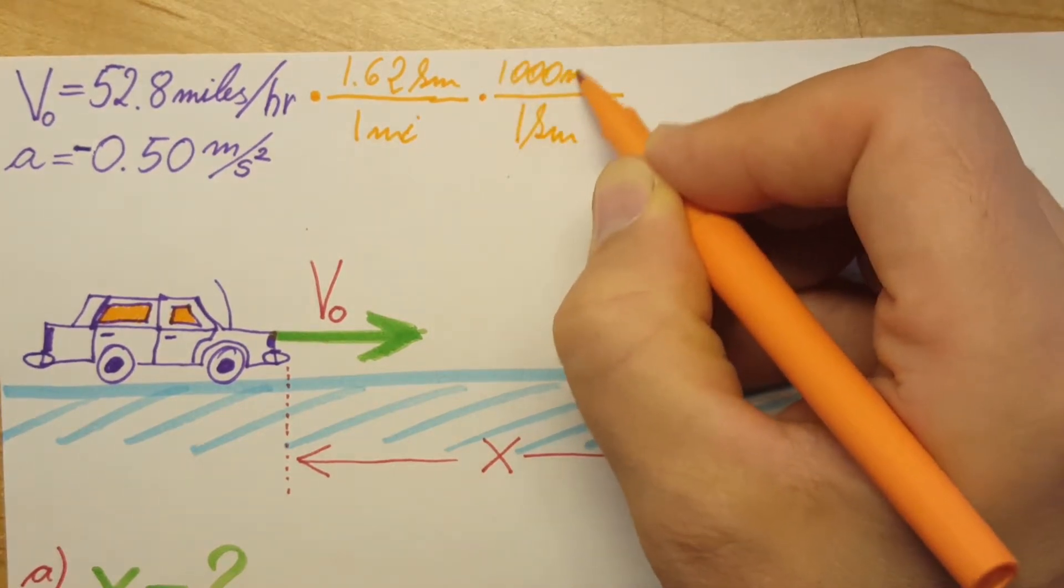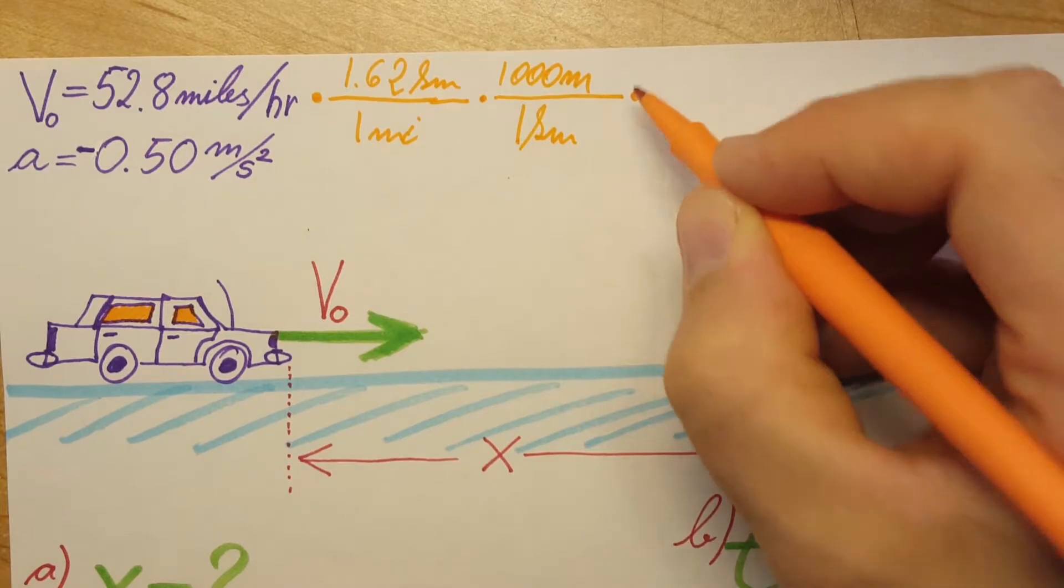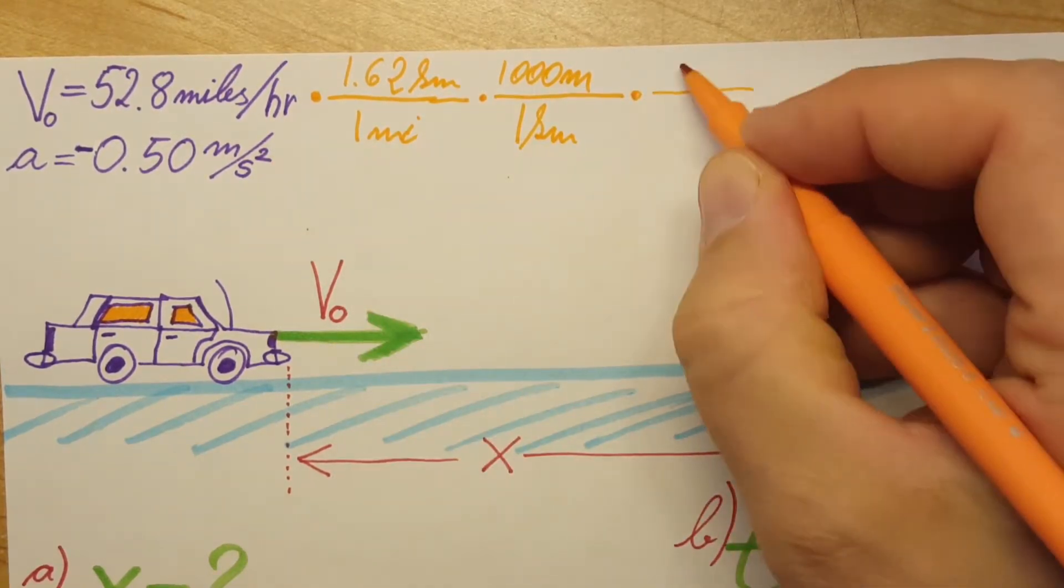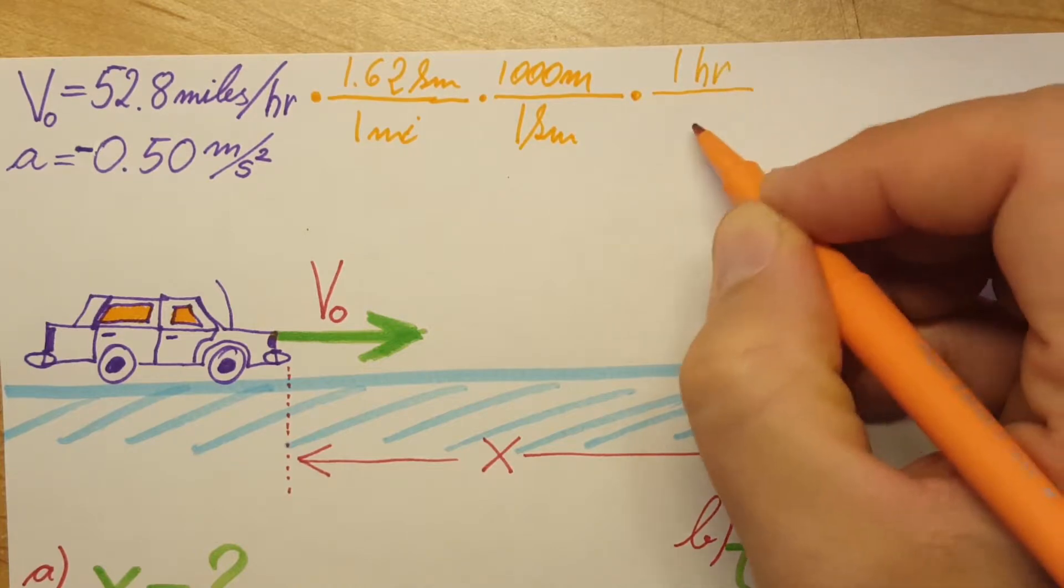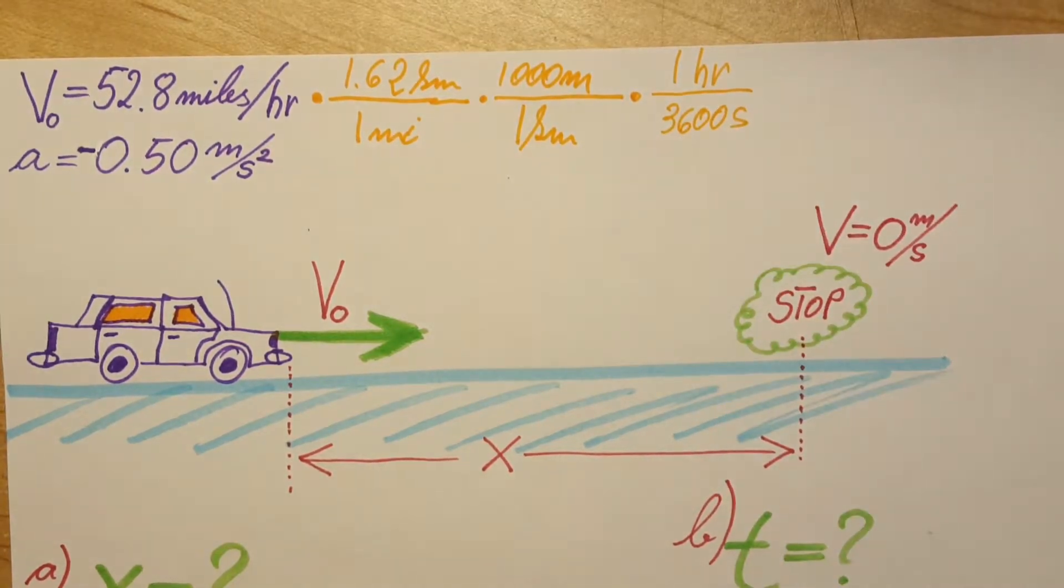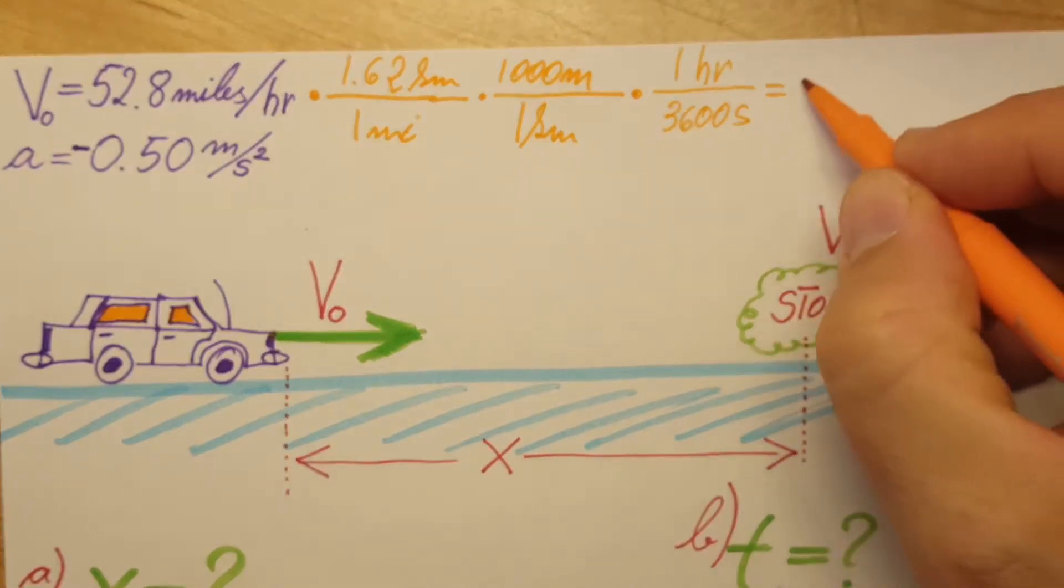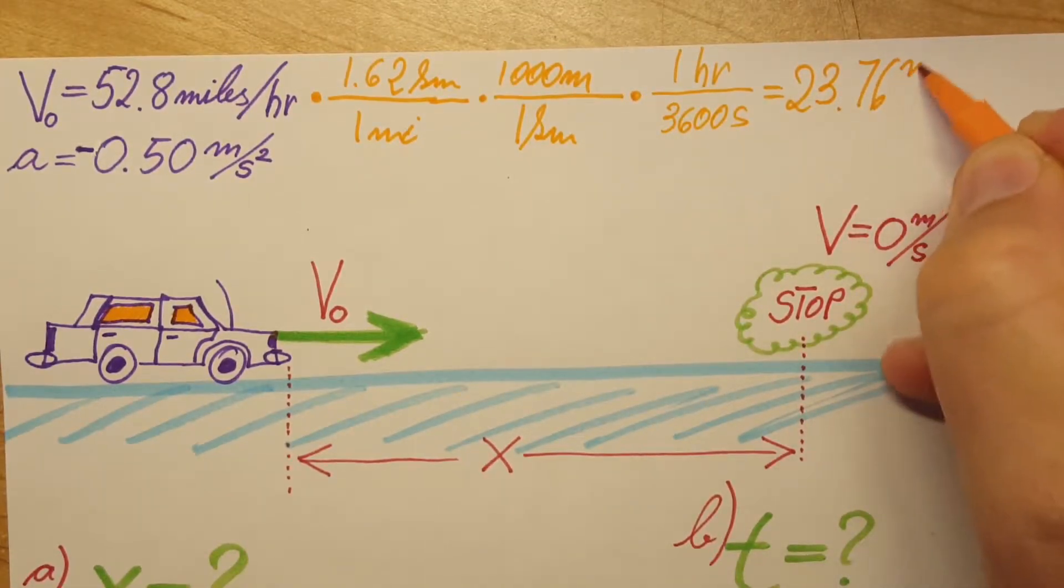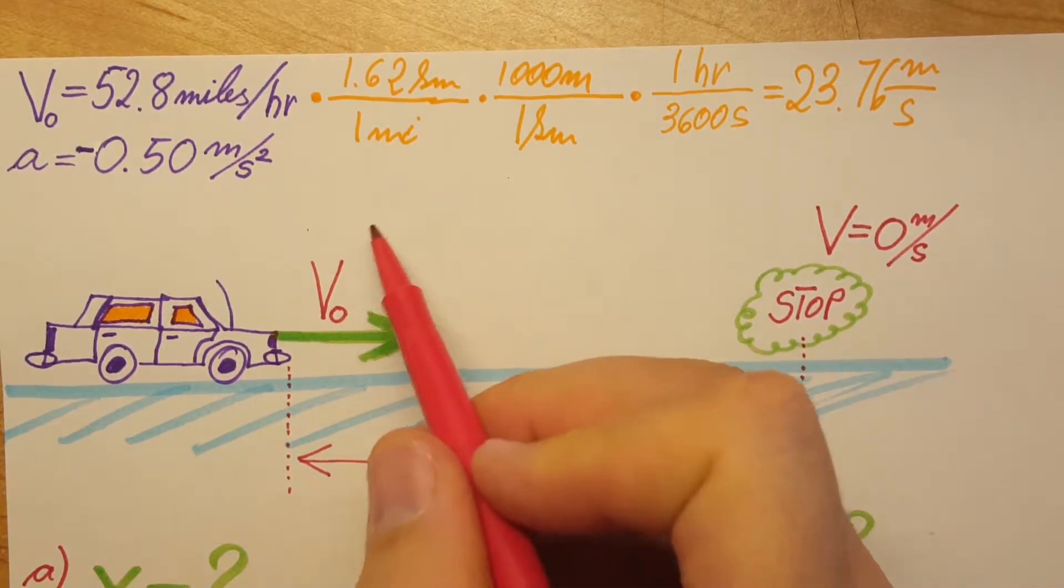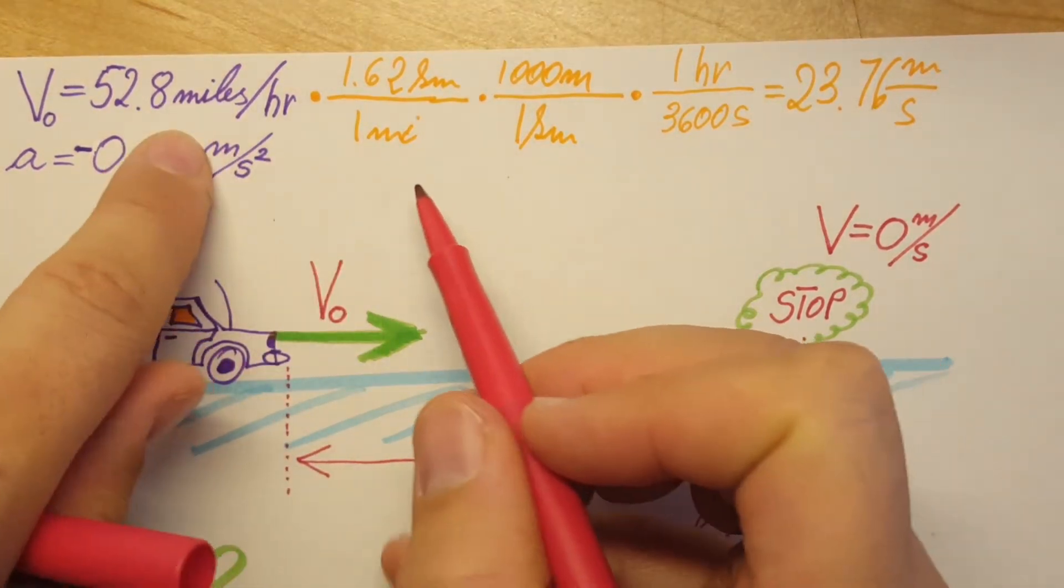Then we change the hour into seconds - one hour has 3600 seconds. This will give us 23.76 meters per second. Let's double check to make sure we didn't make any errors.